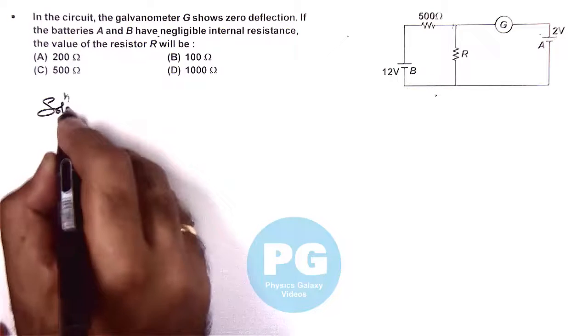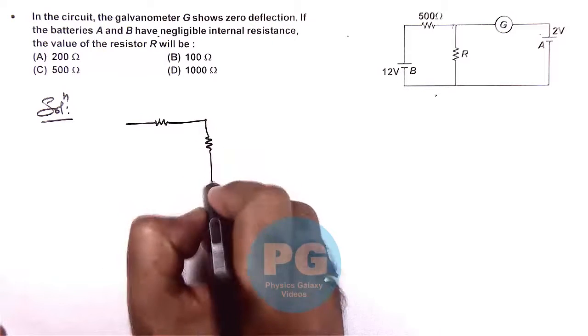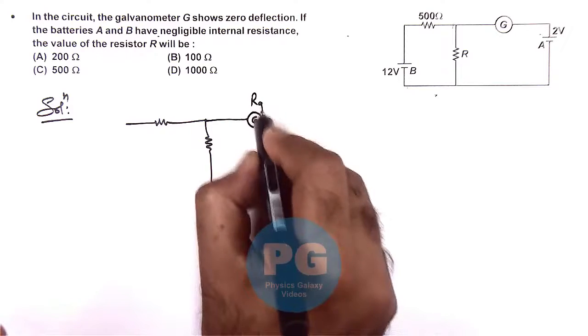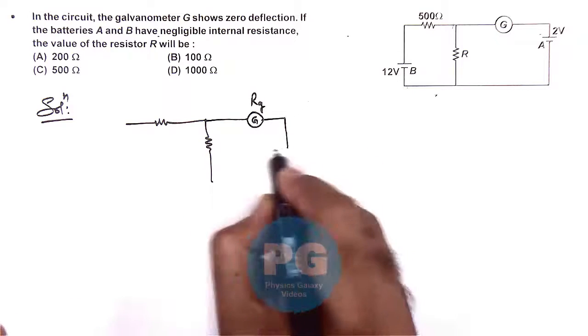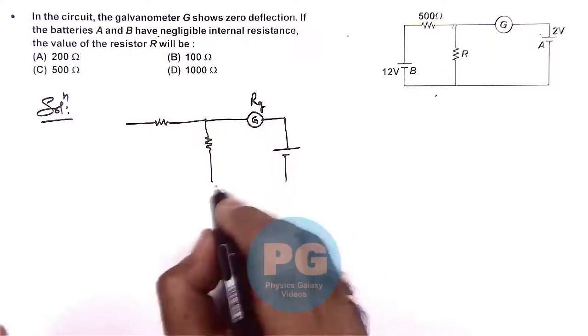In the solution, if I redraw the figure, I can consider the galvanometer to be of resistance RG. However, it will not be used in solving because the current through the galvanometer branch is zero.